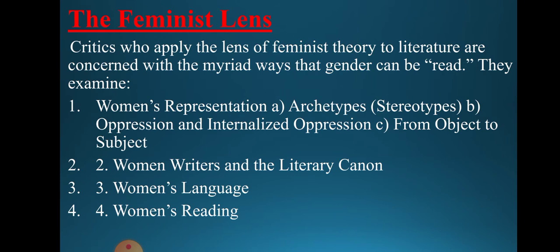What is a feminist lens? Theories are basically lenses. If you wear the lens of feminism, you see things differently — just as wearing sunglasses changes how you see the world. Critics who apply the feminist lens to literature are concerned with the myriad ways gender can be read: women's representation, archetypes, stereotypes, oppression, internalized oppression, the shift from object to subject, women writers, the literary canon, women's language, and women's reading.